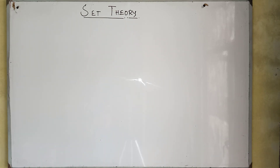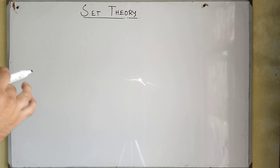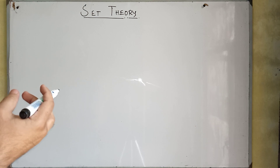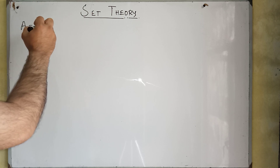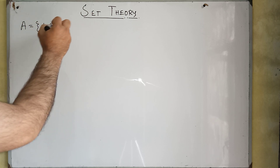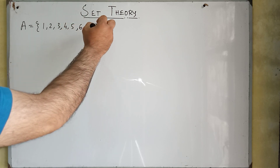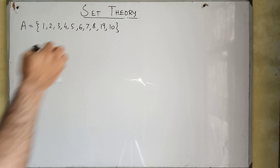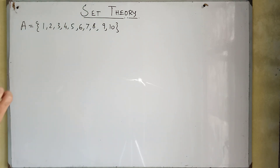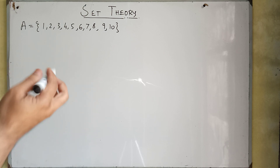Hello everyone, we are going to start set theory today. A set is basically a collection of well-defined objects. For example, if we have a collection of the first 10 natural numbers, this is called a set because we have collected the first 10 natural numbers. Now we have some notations we need to know.